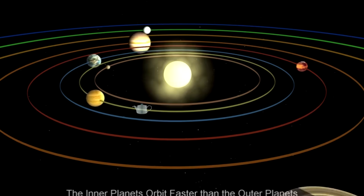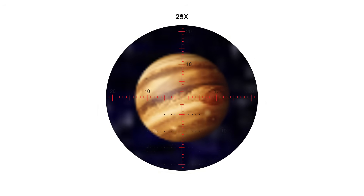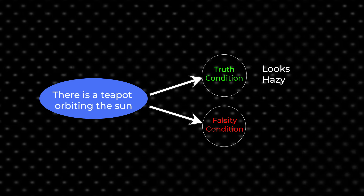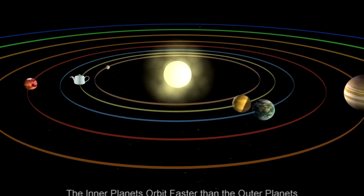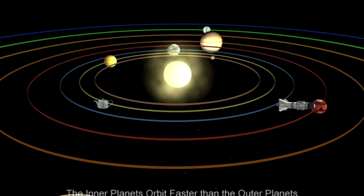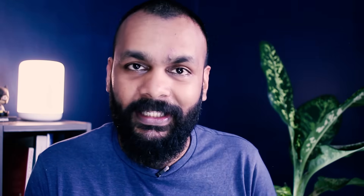Imagine I claim there's a teapot somewhere in orbit around the sun. How do you test this? You could try to find it — there is a truth condition — but even a normal-sized teapot would be far too tiny to see through a telescope. And if you send a spacecraft and don't find it, that doesn't mean it's not there; it could just be somewhere else. There is no falsity condition. The idea that there is a teapot in orbit around the sun is unfalsifiable.